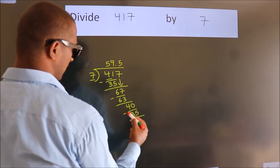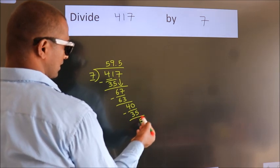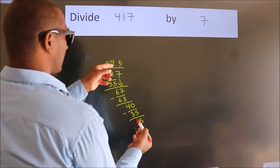Now, we subtract. We get 5. After this, we already have the decimal.